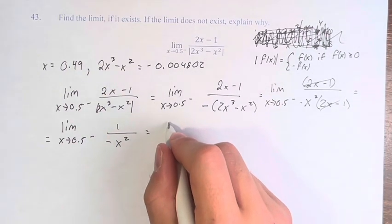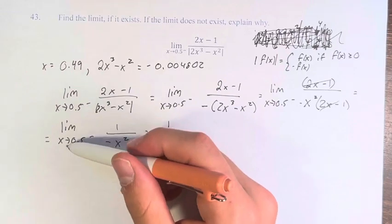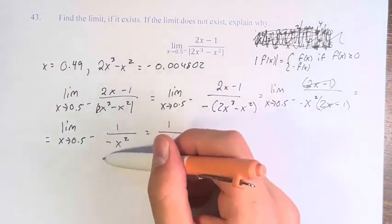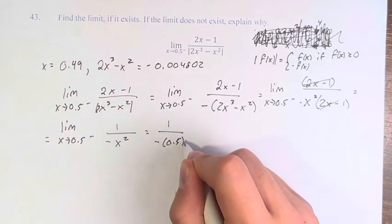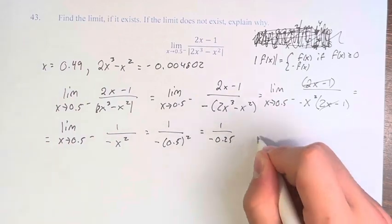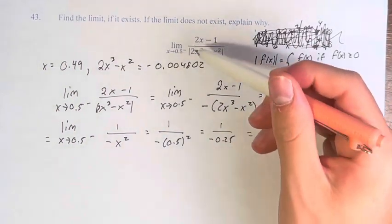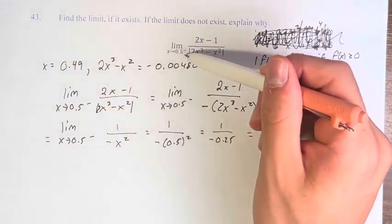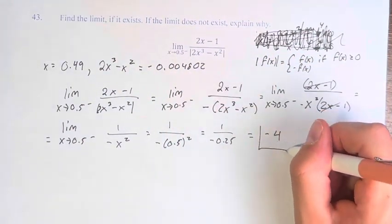Therefore, we have 1 over, plugging in 0.5 here directly, because we're no longer dividing by 0, negative 0.5 squared. This is 1 over negative 0.25. This is negative 4. Therefore, the value of the function as x approaches 0.5 from the left, the value approaches a value of negative 4.